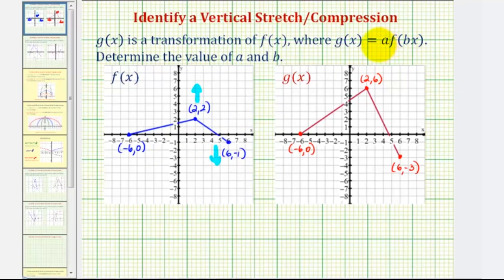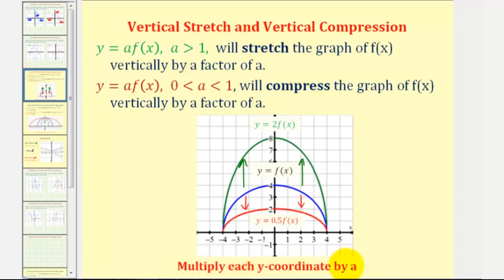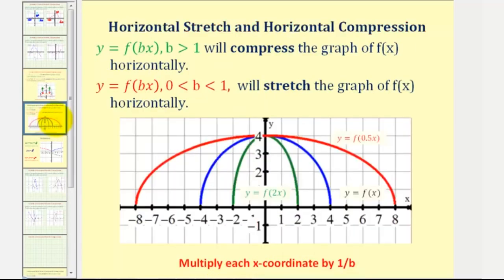Let's take a moment and review how a and b affect the graph of a basic function f of x. Looking at the value of a, if a is greater than one, then we have a vertical stretch by a factor of a. Notice if we look at y equals f of x here in blue, y equals two times f of x is a vertical stretch. And if we graph y equals zero point five times f of x, we have a vertical compression.